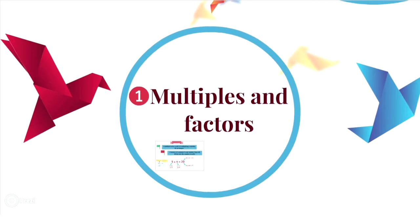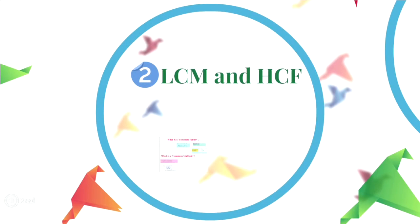The next task is about LCM and HCF. What is a common factor? We work out the factors of 2 or more numbers. The common factor is a factor that is common to 2 or more numbers. Overall, we can say that HCF of numbers is the highest of all common factors. Then we solve some exercises.